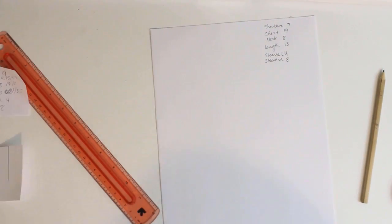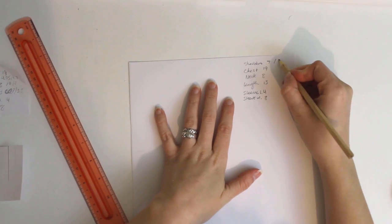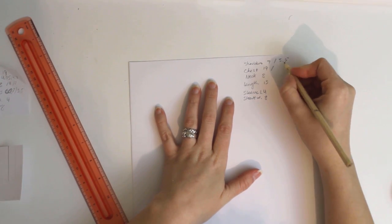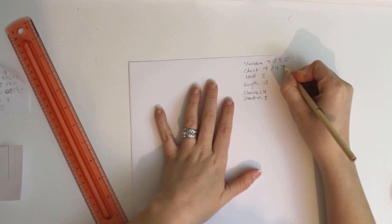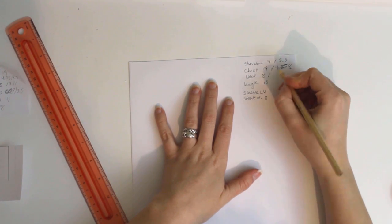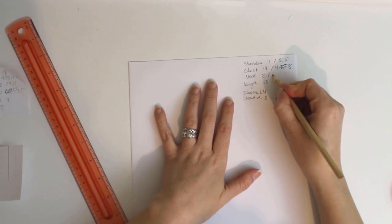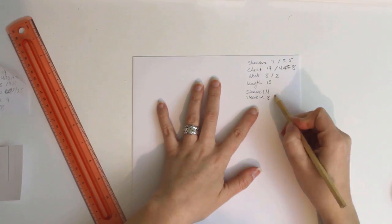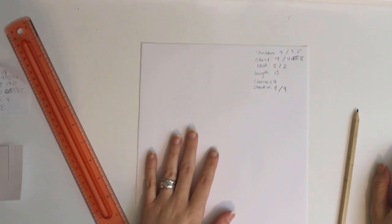Now you'll want to divide your measurements to get the measurements we'll be drawing with. Divide the shoulder measurements in half. Divide the chest measurement by 4. 4.75 centimeters is hard to measure, so I round up to 4.8. Divide the neck measurements by 4 as well. Then divide the sleeve width in half. Now it's time to draw our patterns.